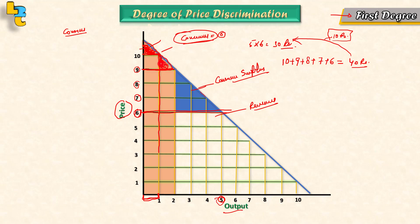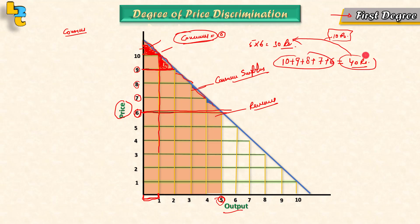Our producer will take all consumer surplus. The total charged is 40 rupees, compared to the normal revenue of 30 rupees. The consumer surplus has been transferred to the producer. So our consumer surplus is now zero. We call this perfect price discrimination — first degree price discrimination.